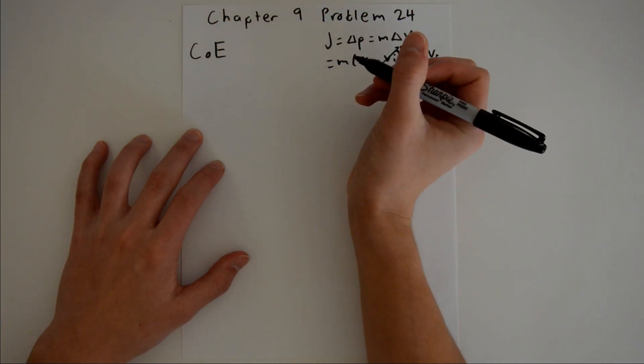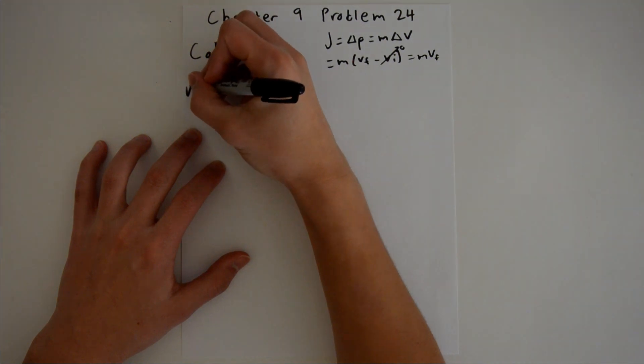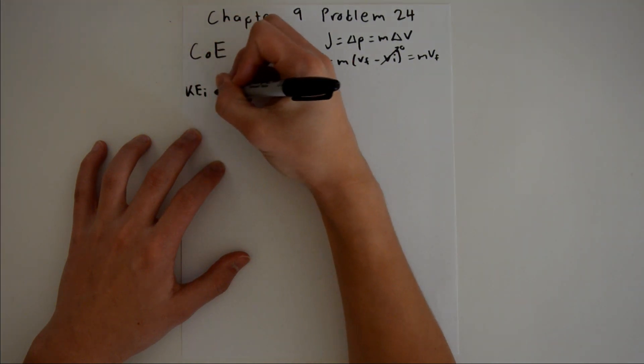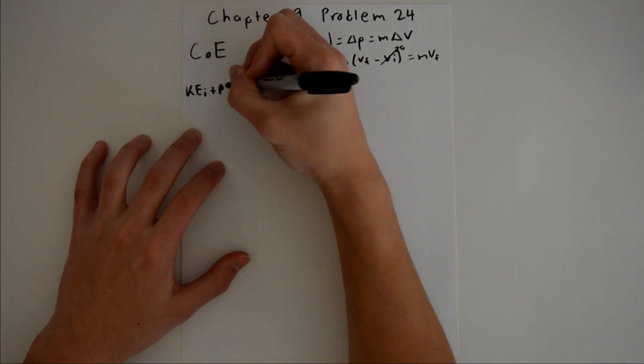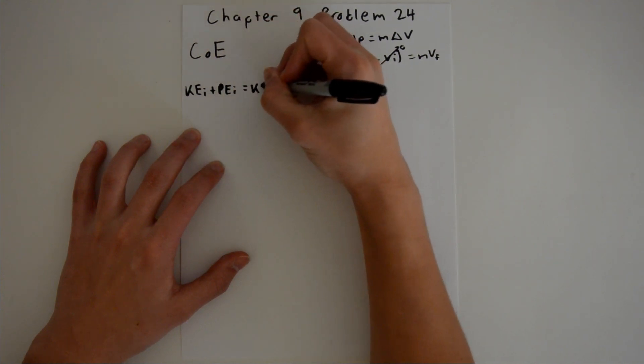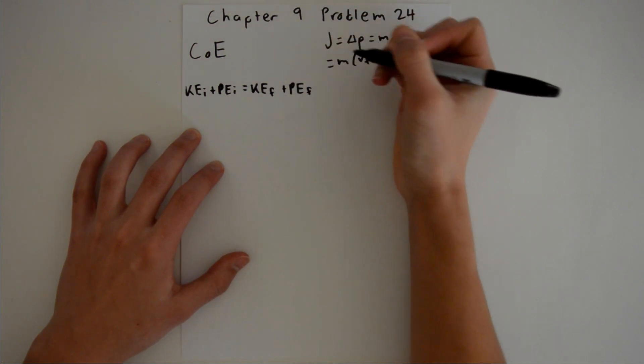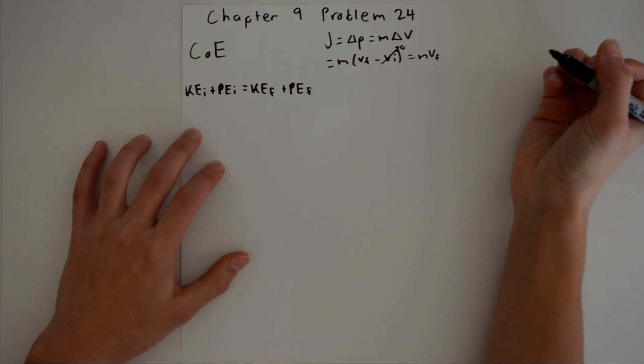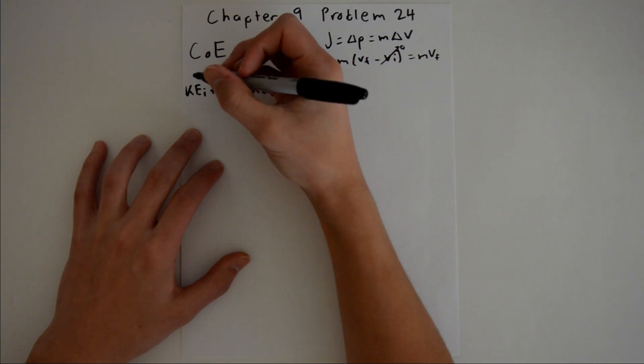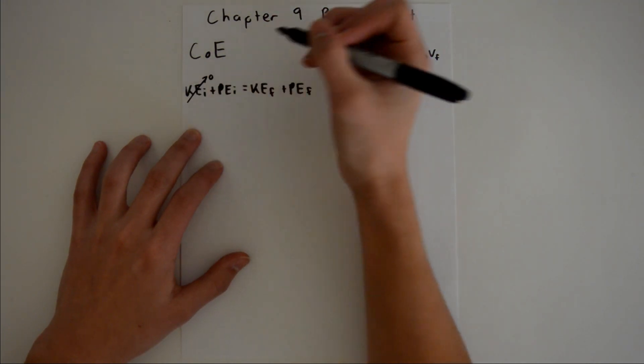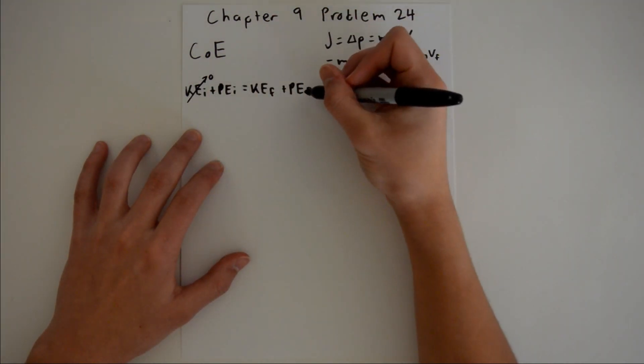Conservation of energy states that the initial kinetic energy plus the initial potential energy is equal to the final kinetic energy plus the final potential energy. Since we know that the person does not start with any initial velocity in the downward direction, there is no initial kinetic energy, and since the person is hitting the ground...